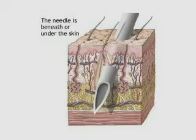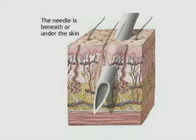Medications injected into the subcutaneous or fatty tissues just beneath the dermis move into the bloodstream faster than they would if given by mouth, but slower than they would if injected into muscle or into a vein. This is because subcutaneous tissue contains fewer and smaller blood vessels, making this an appropriate route for slow, systemic absorption of small amounts of non-irritating aqueous solutions such as insulin and heparin.